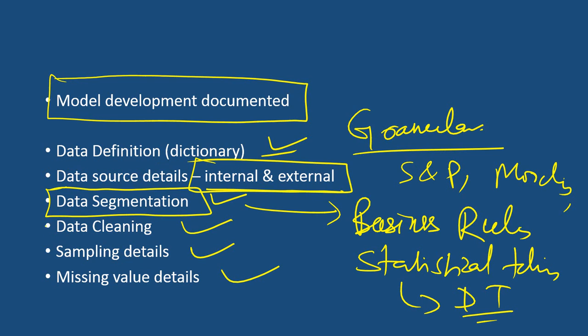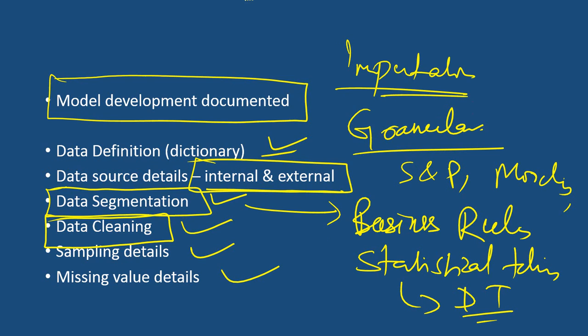Data cleaning is a de facto requirement in any model document and takes a lot of time. Data cleaning should be well documented — which variables are dropped and why, how missing values have been imputed, and how outlier checks have been handled and on what basis something is categorized as an outlier. All these things should be present in the document.